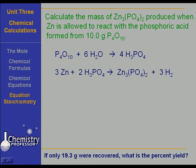If only 19.3 grams of the zinc phosphate was recovered, what is the percent yield? Let's work the problem first. If you don't have experience in working calculations from chemical equations, you might want to go back and look at an earlier lesson on that.